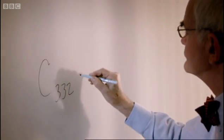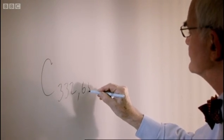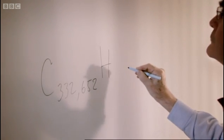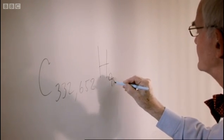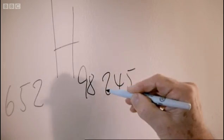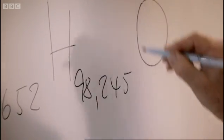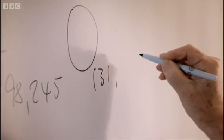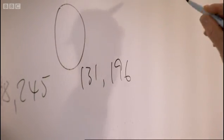In 2002, Eckhard Wimmer realized viruses are simply strings of chemicals. This is the formula for the poliovirus. He wondered whether they could mix a set of these chemicals together and recreate the living, reproducing poliovirus just from its basic ingredients.